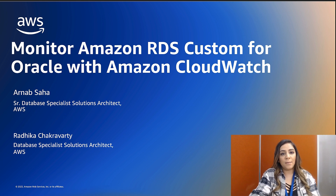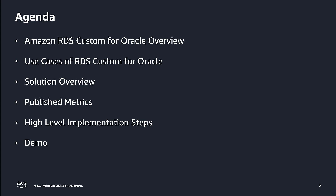With that, let's get started. On the agenda, I'm going to quickly recap what RDS Custom for Oracle is and a couple of use cases that this service caters to. Thereafter, I'll discuss the solution overview which will enable monitoring RDS Custom for Oracle using CloudWatch metrics and go over the actual CloudWatch metrics that will be auto-created as part of the solution. Arnab will then discuss the custom scripts we developed, walk through the high-level implementation steps, and show a quick demo. We have a lot to cover, so let's dive right in.